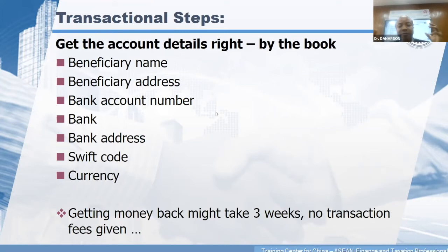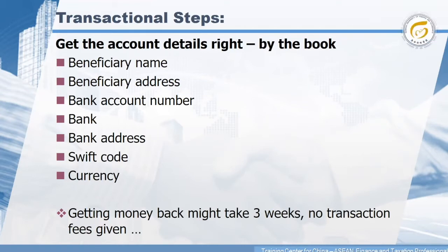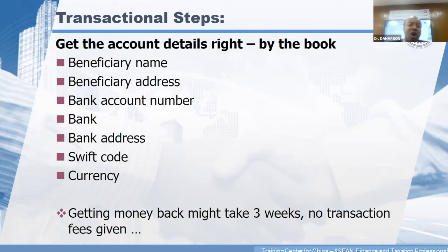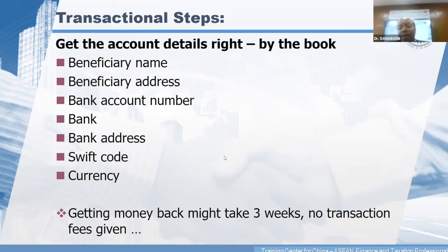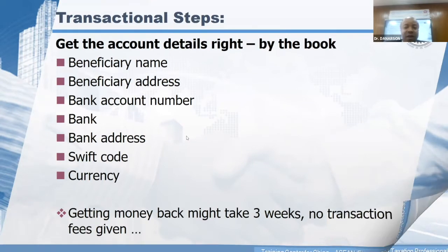The bank account number must be exactly right. The bank name may also require a specific branch, so you have to ask the local correspondent bank. The SWIFT code, which we discussed before, is very important. You must also specify the currency — are you using RMB or dollars? Getting money back, as I said, might take three weeks, and you have to forget about transaction fees if you do get your money back, meaning you lose money. So be careful.